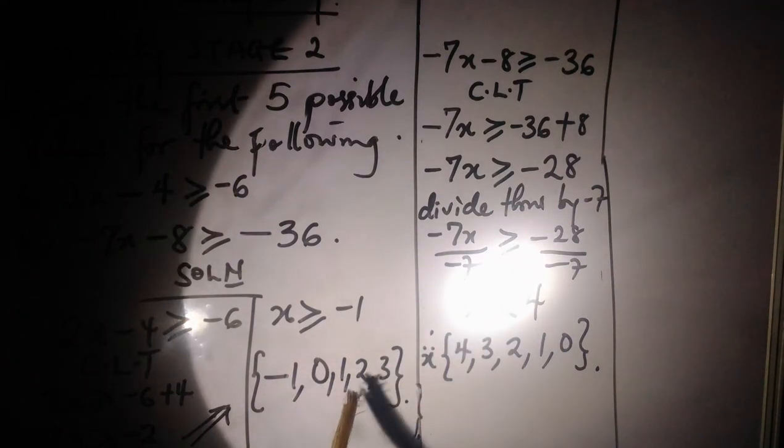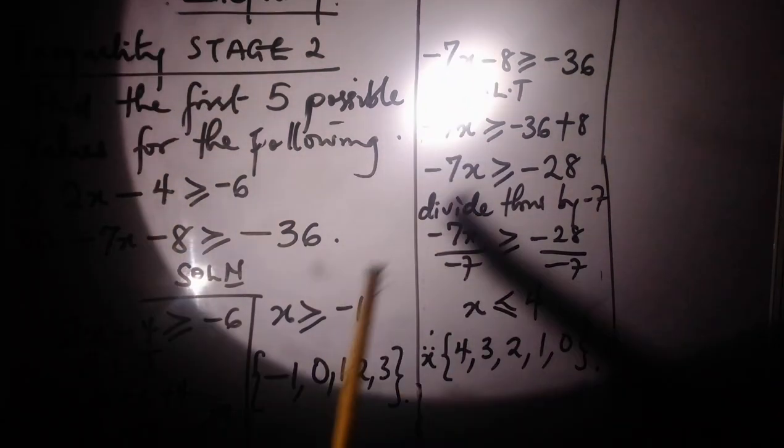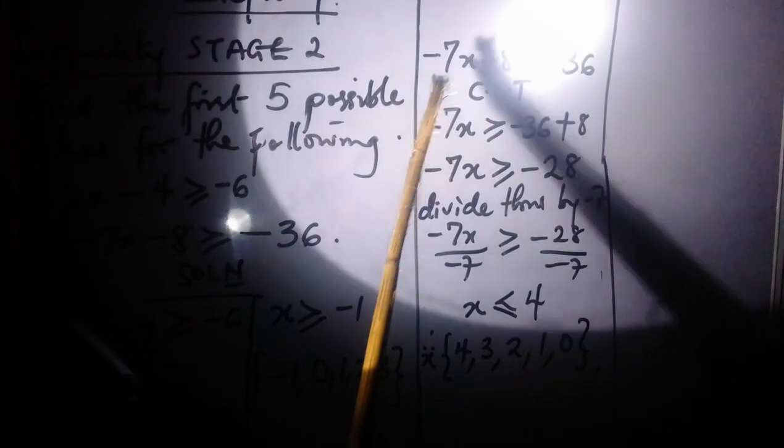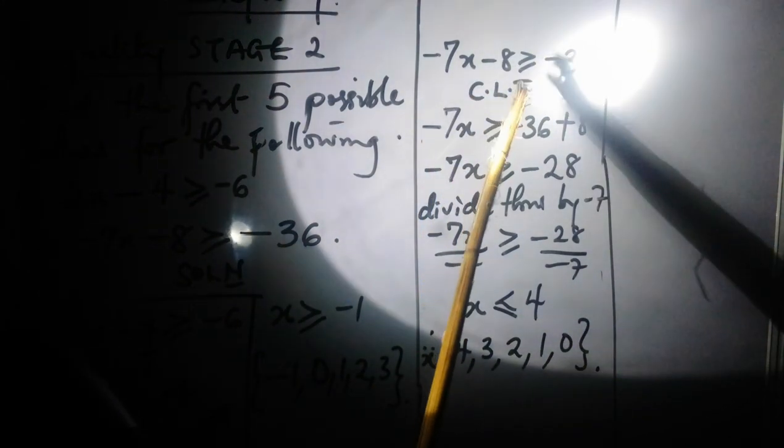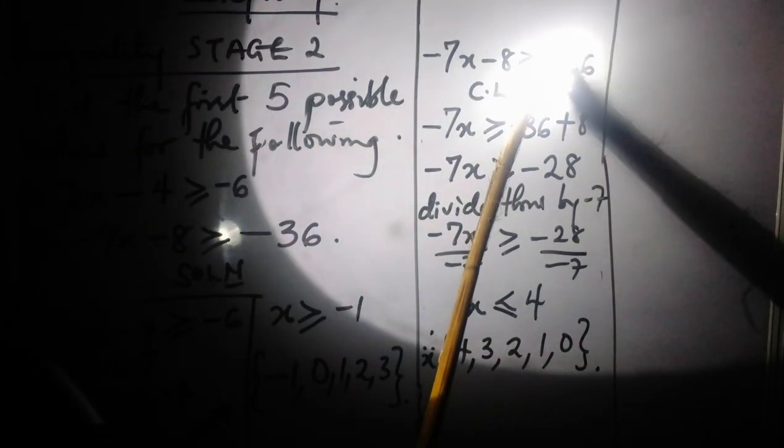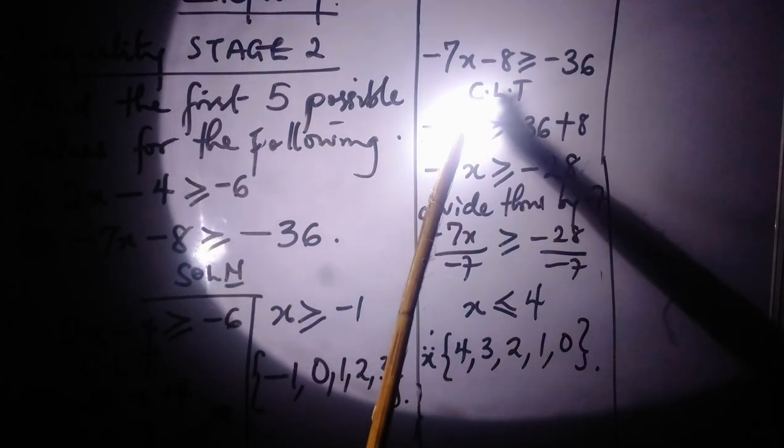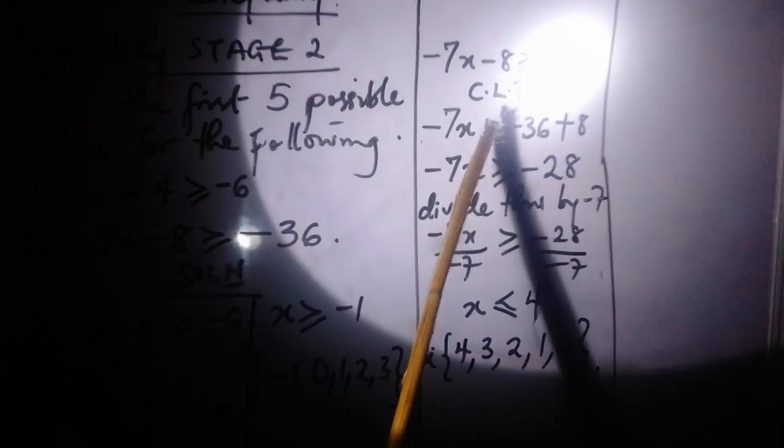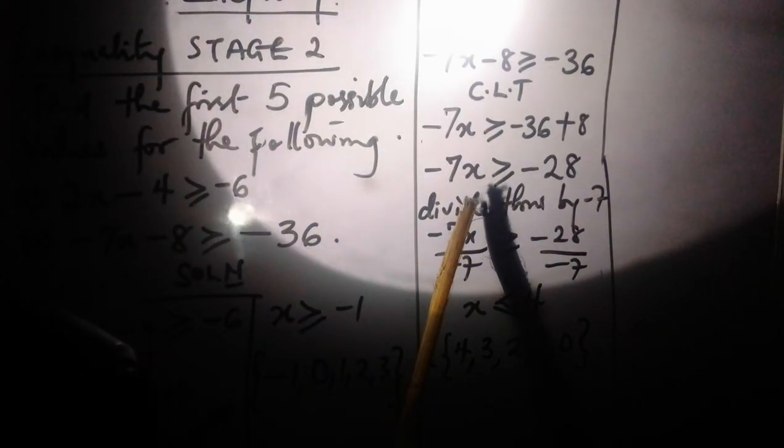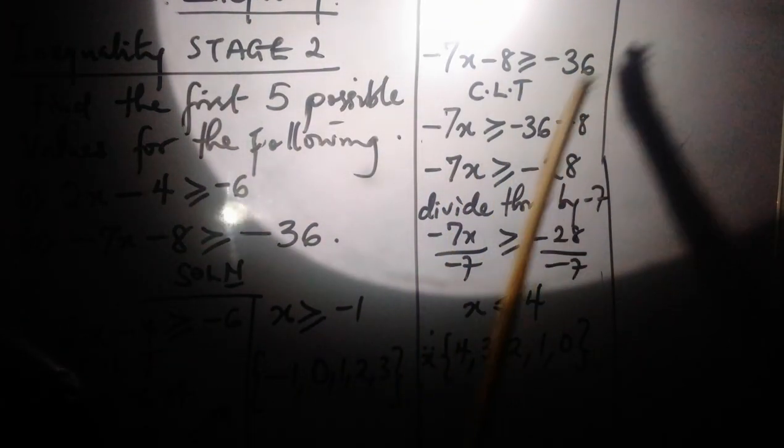Look at -7x minus 8 greater than or equal to -36. Consider that. Collect like terms - the like terms are -8 and -36.